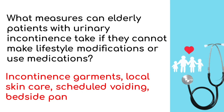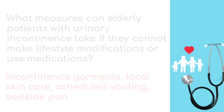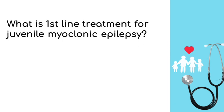What is the first-line treatment for juvenile myoclonic epilepsy? Valproic acid. Valproic acid is the most dangerous anti-epileptic in pregnant women because it has the highest risk of neural tube defects. It is also a teratogen and hepatotoxic.